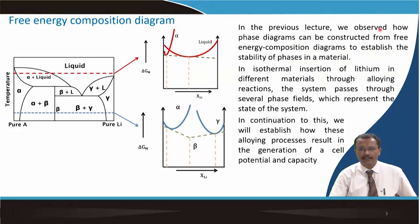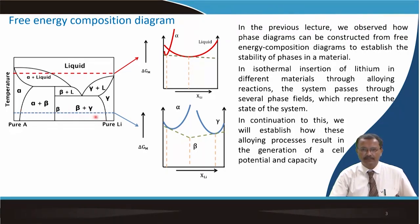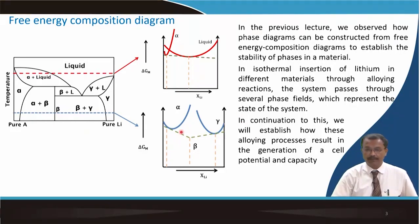In the previous lecture, we observed how this phase diagram can be constructed from the free energy composition diagram — we explained the genesis of that. In isothermal insertion of lithium in different materials through alloying reactions, the system passes through several phase fields as you can see, which represent the state of the system. In continuation to this, we will now establish how this alloying process results in the generation of cell potential and capacity.